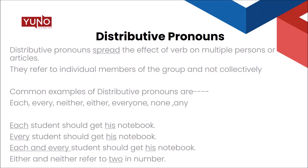The commonest examples of distributive pronouns are: each, every, neither, either, everyone, none, any, etc. Of course there are more distributive pronouns, but these are the commonest cases.